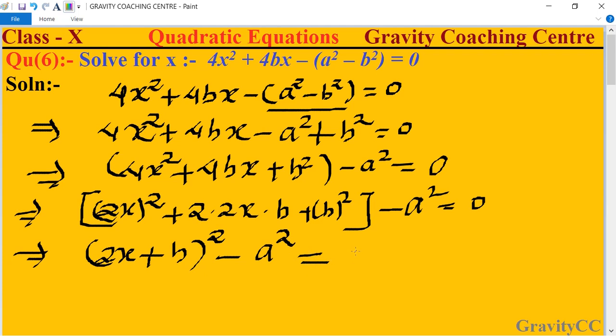Now we use the identity a² minus b² equals (a + b)(a - b), so it will become (2x + b + a).